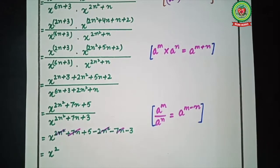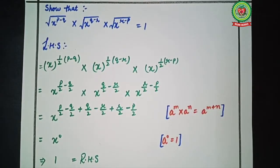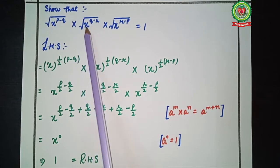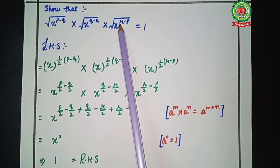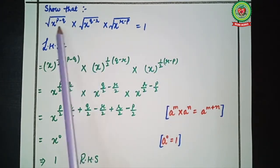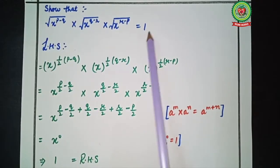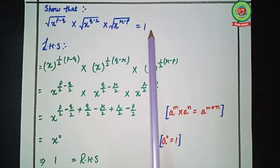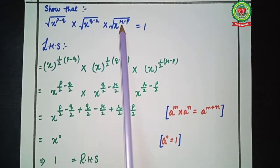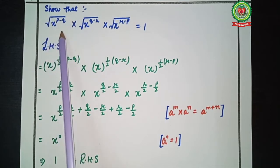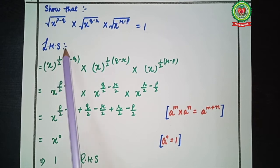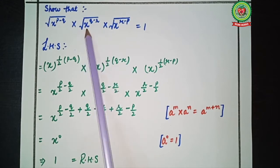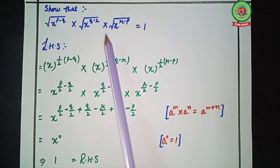Now let's move to the next example. The statement is: show that the square root of x to the p minus q, multiplied by the square root of x to the q minus r, multiplied by the square root of x to the r minus p, equals 1. We have to prove this equals 1, so we start by taking the left-hand side. Since square root means 1 upon 2, we write x raised to 1 upon 2, bracket p minus q.